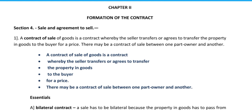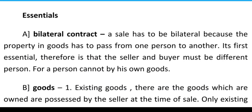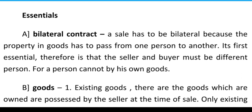Now let's discuss what are the essentials of a contract of sale. The first essential ingredient is a bilateral contract. A sale has to be bilateral because the property in goods has to pass from one person to another. Therefore, the seller and buyer must be different persons — a person cannot buy his own goods. Bilateral contract means two parties must be there: a seller and a buyer. Because property in goods will transfer from one person to another — only then it is called a sale.